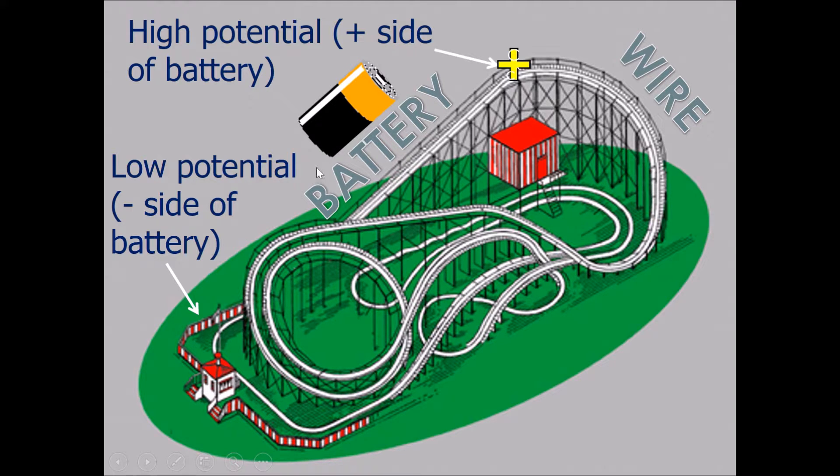However, once you connect a wire from one side to the other side, this is like connecting the path of the roller coaster from the high potential side to the low potential side. Therefore, allowing current to roll down from the high potential to the low potential.